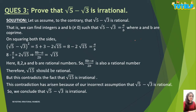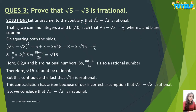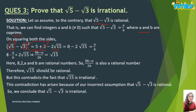Next: when two irrational numbers are given and you need to prove their sum or difference is also irrational, you take the square on both sides. For example, prove root 5 minus root 3 is irrational. Assume root 5 minus root 3 equals A upon B where A and B are co-prime, then square both sides. Using the identity (A minus B) squared, root 5 squared gives 5, root 3 squared gives 3, and the cross term gives 2 times root 15. So you get 8 minus 2 root 15 equals A squared upon B squared.